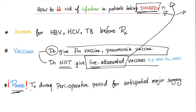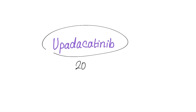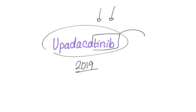Pause the treatment during the perioperative period before any major surgery. There is a new drug approved in 2019 for rheumatoid arthritis — we'll talk about it in the next video. It's upadacitinib. It ends in -tinib, so what will the mechanism of action be? Let me know the answer in the comment section.